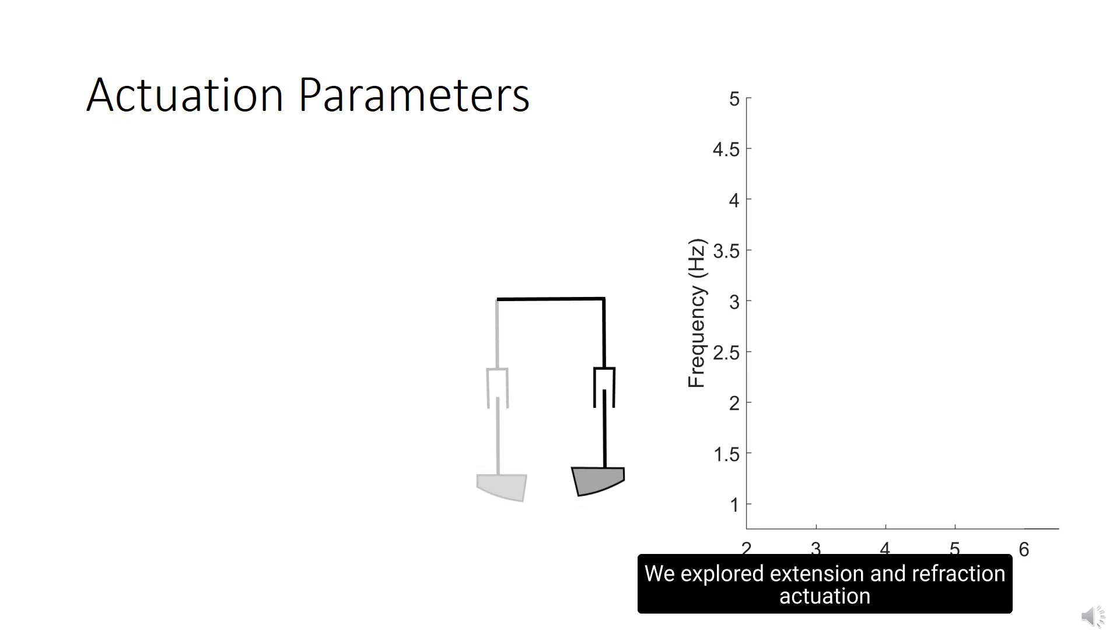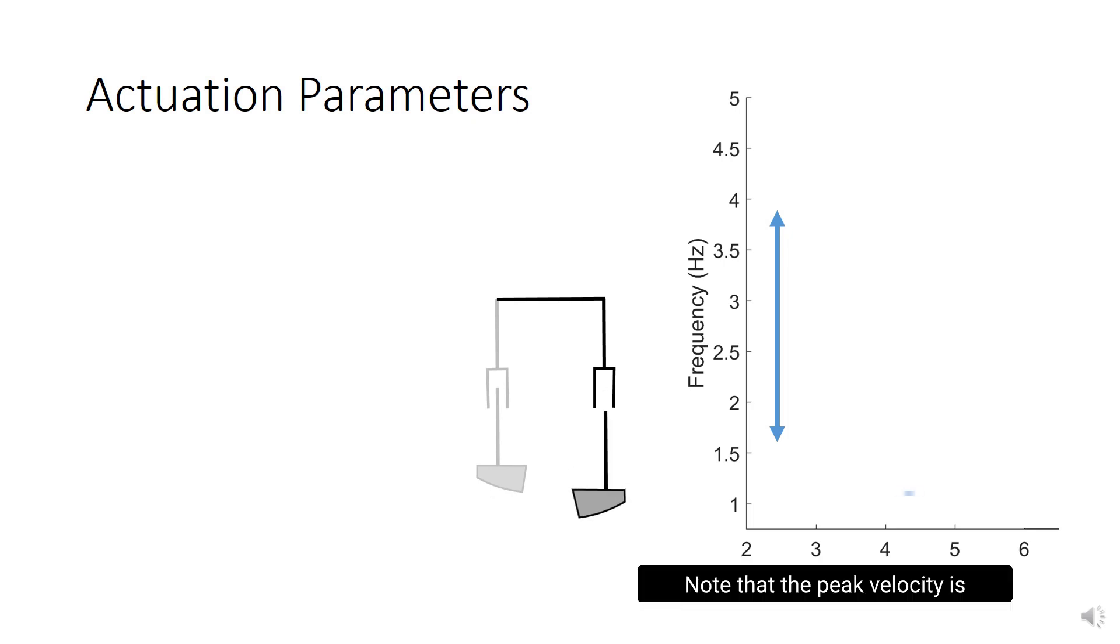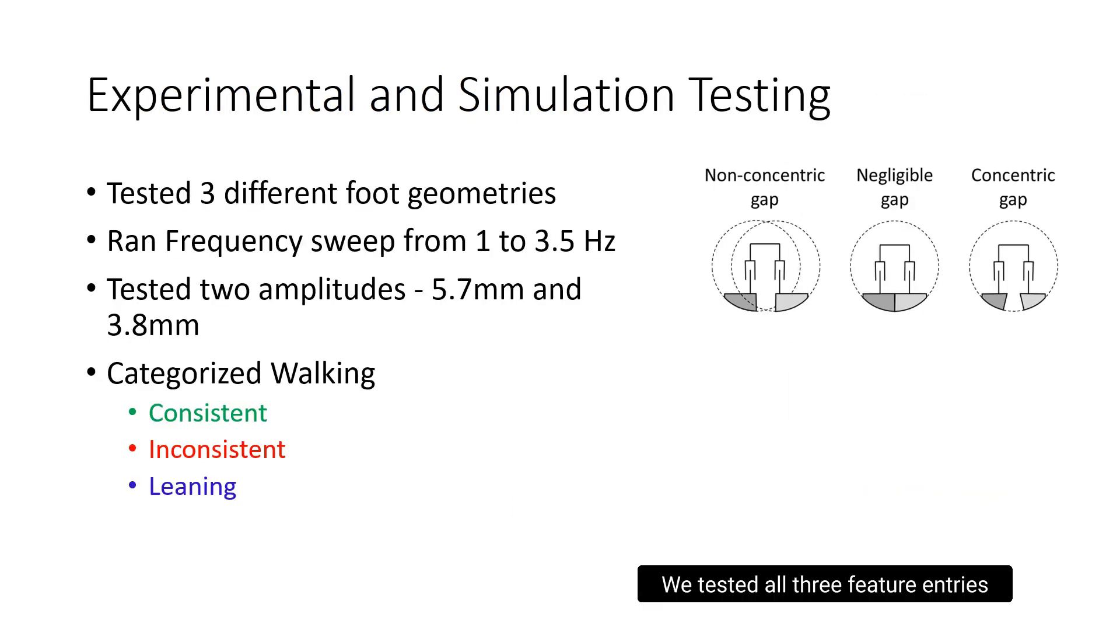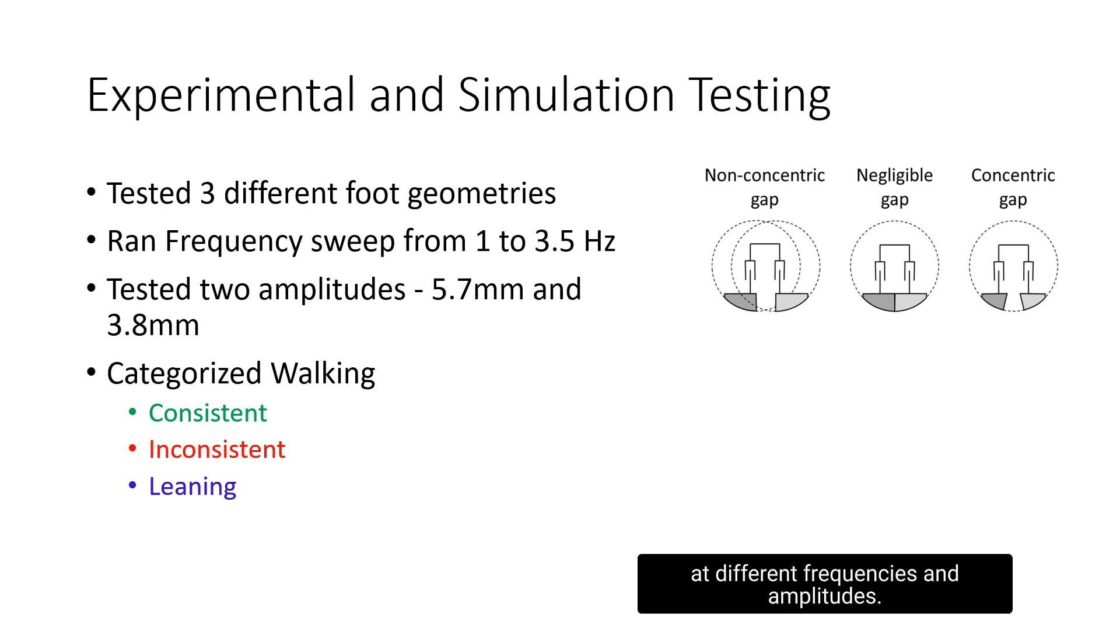We explored extension and retraction actuation parameters in simulation and experiment, varying both the frequency and the amplitude. Note that the peak velocity is limited by the platform servos. We tested all three feet geometries at different frequencies and amplitudes in simulation and physical experiment. We categorized walking as consistent, inconsistent, and leaning.